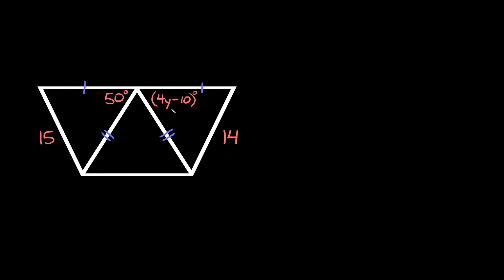Let's try this last one — here we're going to solve for y. This angle is 4y minus 10 degrees, and we can use the hinge theorem again because we have two congruent sides up here and these two sides are congruent to each other. Since we meet those two conditions, we can compare the two angles between the congruent sides. This angle is 50 degrees, and the side 14 is smaller than the side 15 over here.